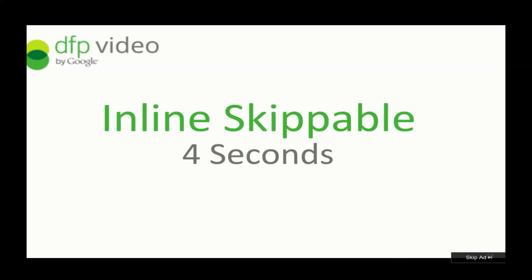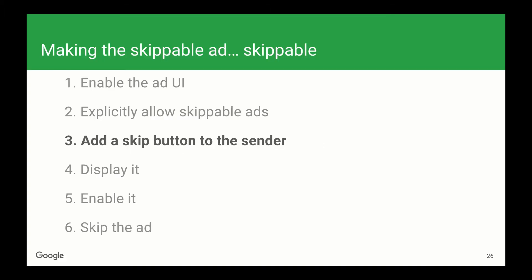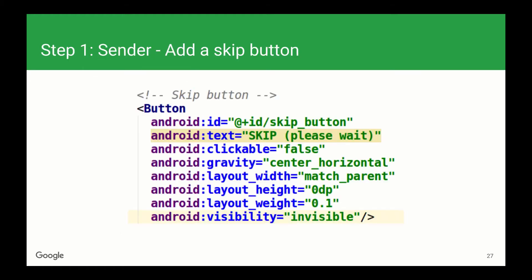Now that you've got the ad implemented, you'll see skippable ads on your Cast device. There's only one problem — we have no way of clicking on the skip button. So how will we actually skip the ad? That's where sender apps come in. Our next step is to add a skip button to the sender. This XML adds a skip button to our app. We're setting the text to 'skip, please wait', and disabling clicks because we want to assume that any skippable ad will not be skippable as soon as it renders, but rather at some later time. We're also defaulting its visibility to invisible because we only want to show the button for skippable ads.